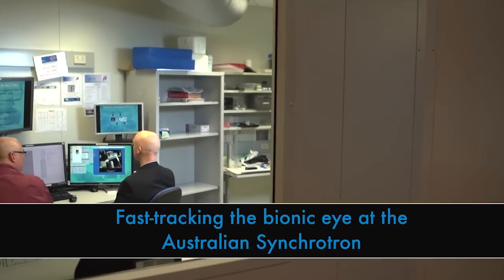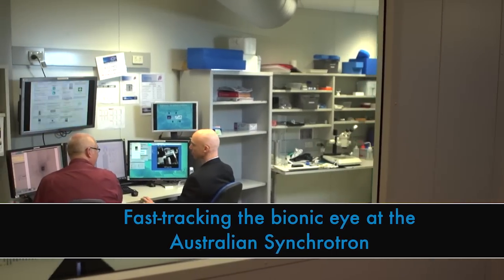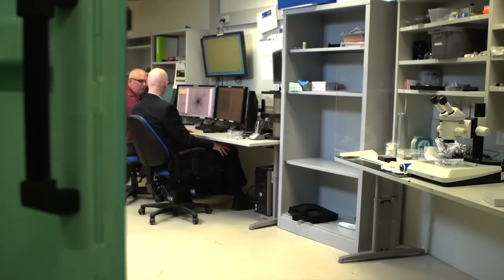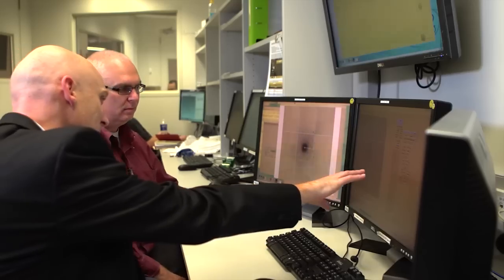We're developing a bionic eye to help blind people see. When we talk to one another, to be able to see each other's faces and interpret how the other people are receiving your conversation. But for a lot of people who are blind, they can't do that. And so their social interactions are limited somewhat. The devices we're working on at the moment are a brain implant. So it doesn't go into the eye. It goes directly into the brain and stimulates the visual cortex.